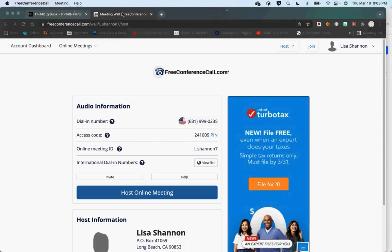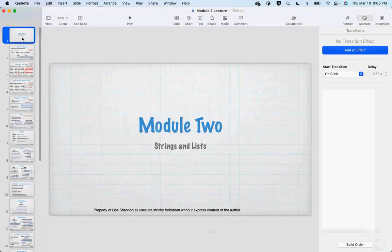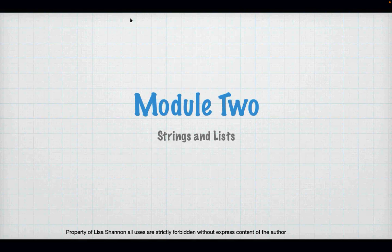So everyone should be able to see my screen now. Let me get to the slides. So what are we talking about this week? We're talking about everything associated with strings and lists. That's kind of repeating myself because a string is a list — it's just a special kind of list. You can only do certain things with a string; there's less freedom but more functions that Python gives you, and with a list there is a lot of freedom in what you can do.